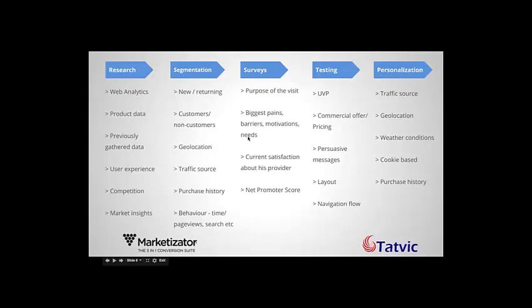After that, you go to segmentation. Segmentation can be made based on new versus returning customers, geolocation, traffic source, purchase history, and also behavior — time, page views, search, et cetera. After this segmentation, you can get qualitative data by using surveys, such as finding out the purpose of the visit, the biggest pains, the biggest barriers or motivations, and the current satisfaction or net promoter score.